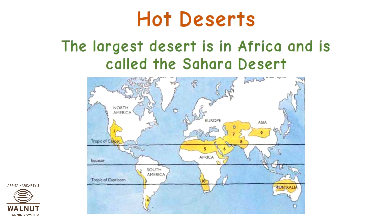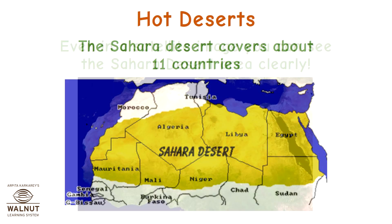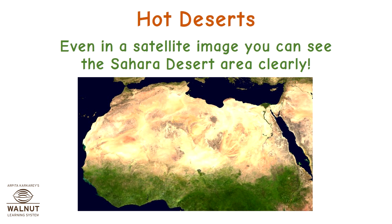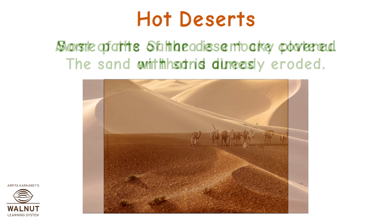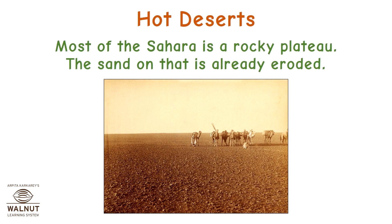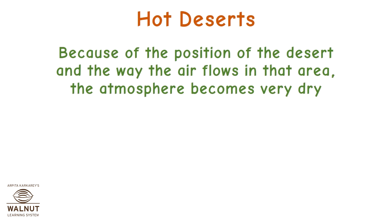The largest desert is in Africa and is called the Sahara Desert, which covers about 11 countries. Even in a satellite image you can see the Sahara Desert area clearly. Some parts of the desert are covered with sand dunes; most of the Sahara is a rocky plateau with sand already eroded. As you can see, the Sahara lies under the subtropical high pressure belt, and because of the position of the desert and the way air flows in that area, the atmosphere becomes very dry.